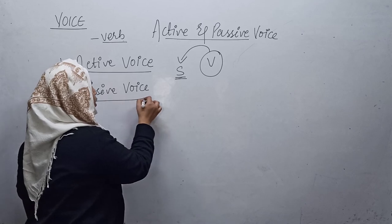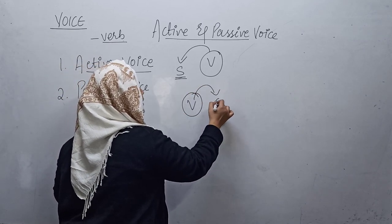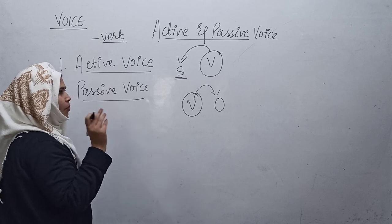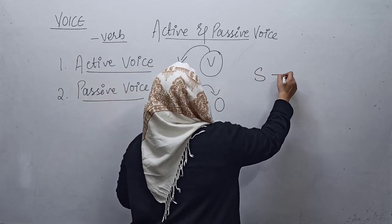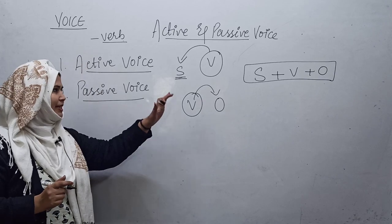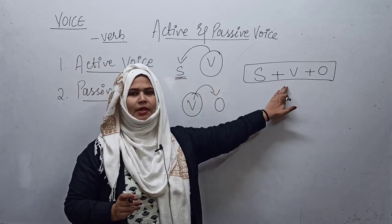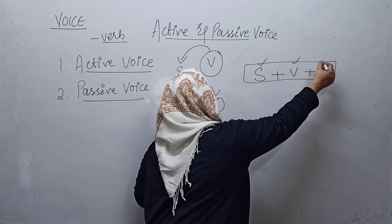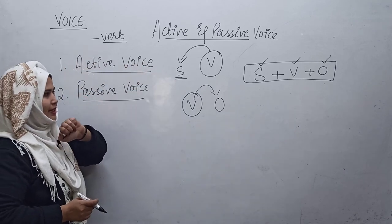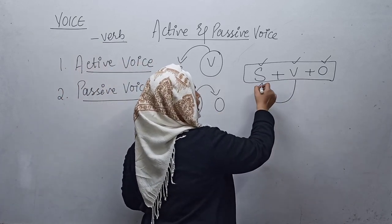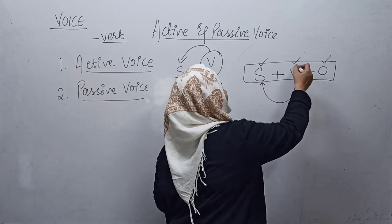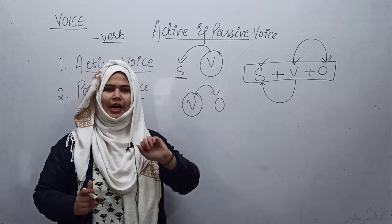When we come to passive voice, the verb is now giving importance to the object. In active and passive voice, the most important thing is the verb. A sentence is made up of a basic structure — it needs a subject, a verb, and an object. When the verb gives utmost importance to the subject, it's active voice. When the verb gives importance to the object, it's passive voice.